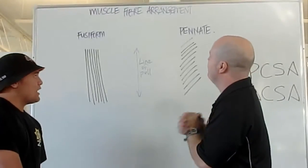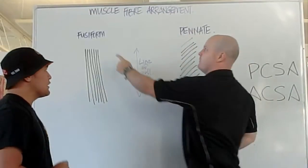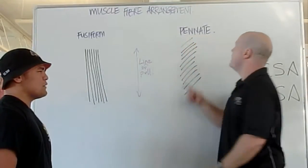What are we going to talk about today, Mo? Muscle fibres arrangement. Gorgeous. We've got two main types: fusiform and pinnate.